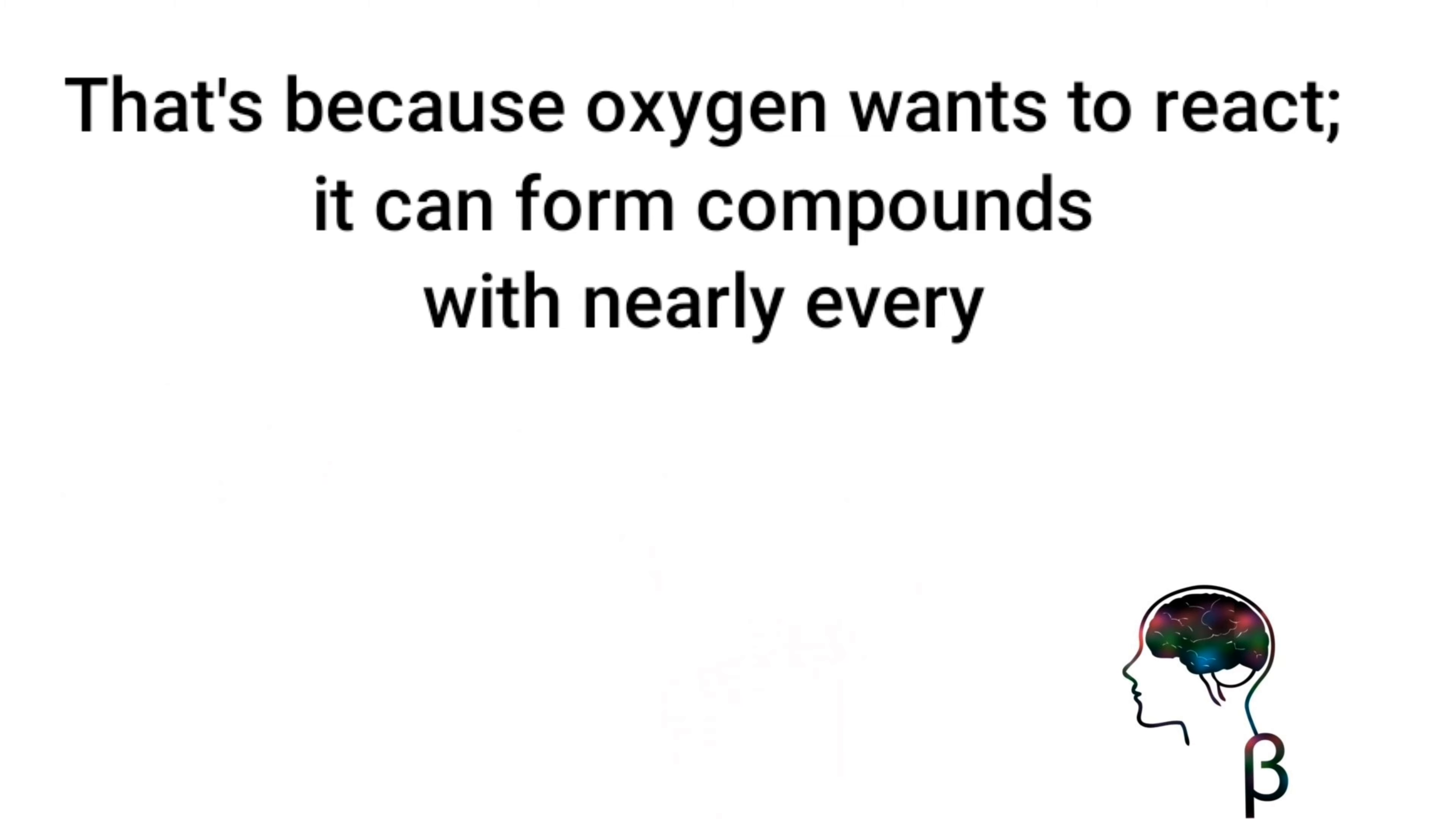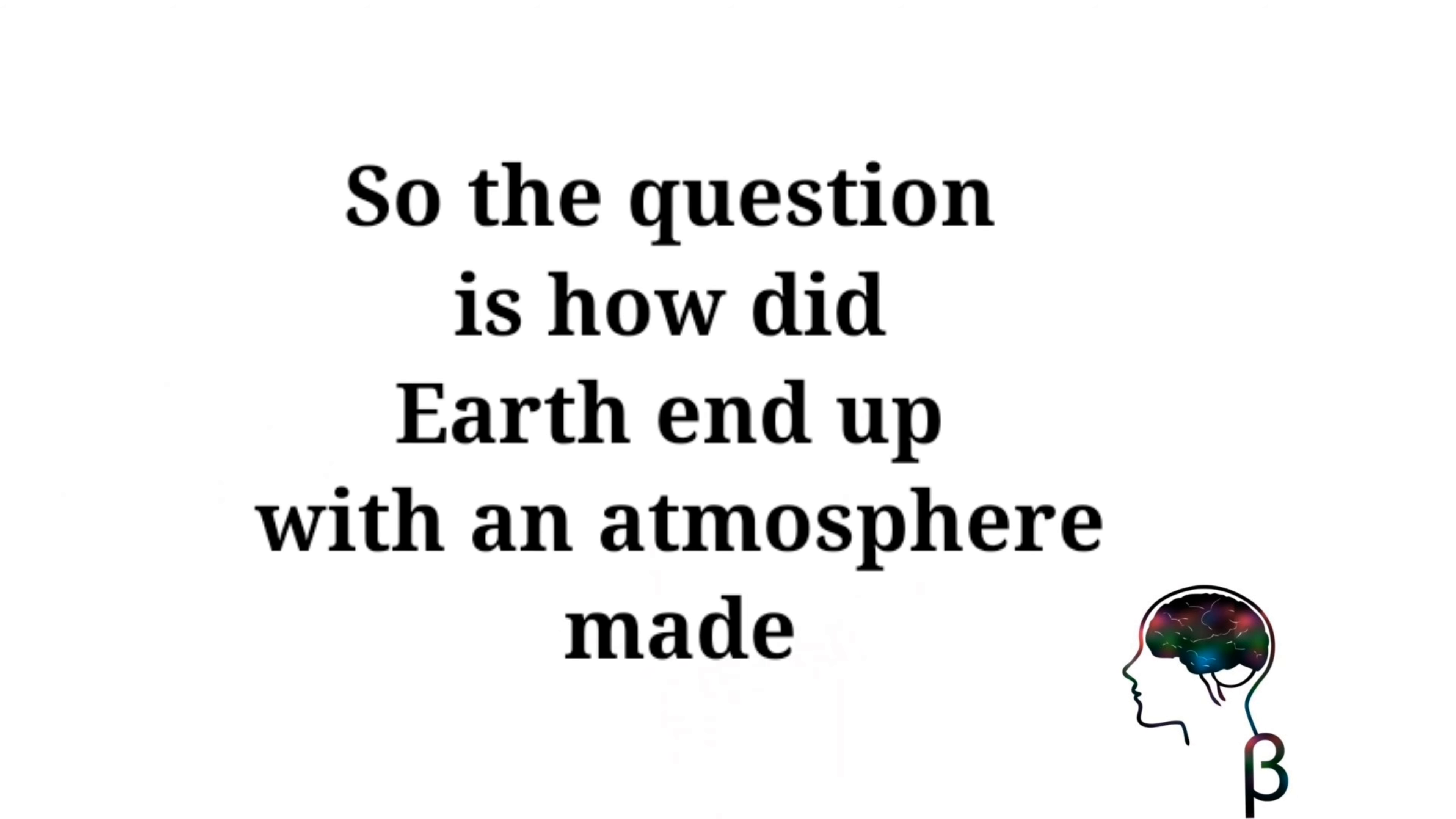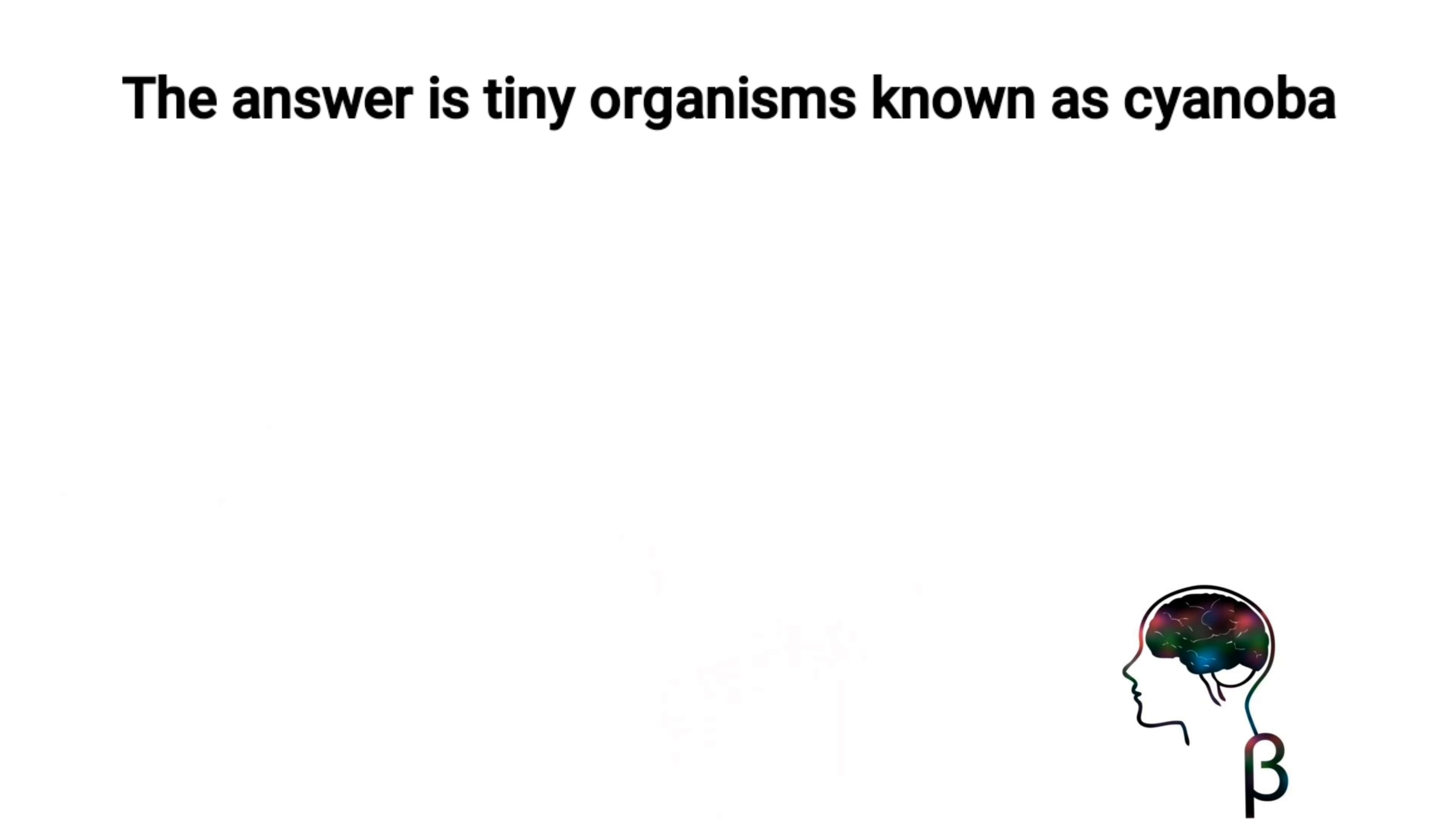That's because oxygen wants to react. It can form compounds with nearly every other element on the periodic table. So how did Earth end up with an atmosphere made up of roughly 21 percent oxygen?